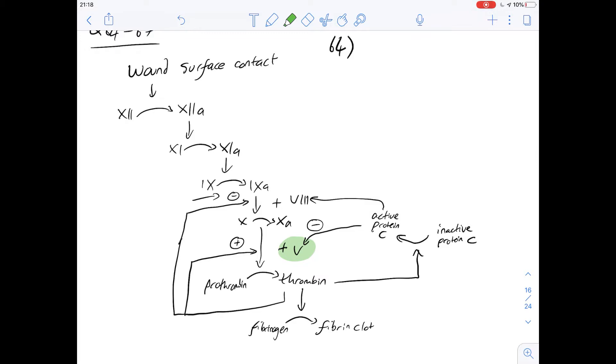What about factor 10a? Well, factor 10a works with factor 5 to convert prothrombin to thrombin, so it's not going to be a precursor for it, it just works with it. And then thrombin - is it a precursor for it? Well, it's a product of a reaction that factor 5 has a role in facilitating, so it's not going to be a precursor of it either. So the answer for this is going to be D, none of the above.